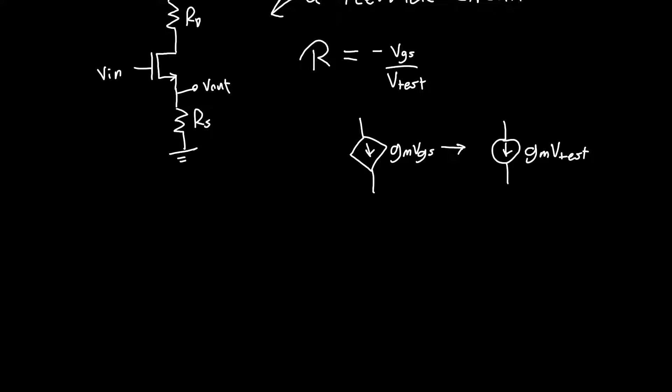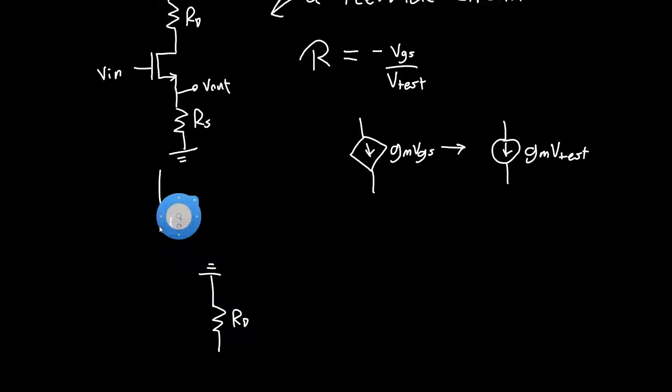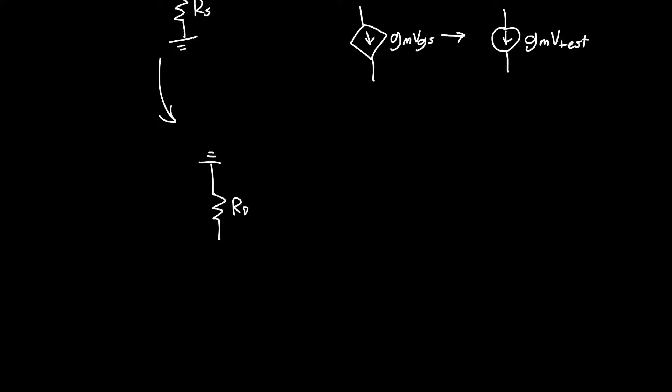Let's create the small signal model first of this circuit. VDD is going to become ground, so we've got RD. I'm going to ignore RO just because I don't want to make my life any more difficult than it needs to be. This is GM VGS, we don't have an RO, this is RS, and then our VGS is here. That's just the simple hybrid pi model, and this is our input voltage VN.